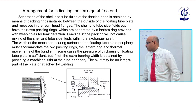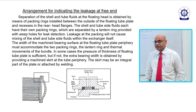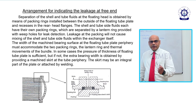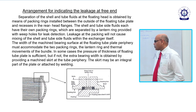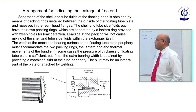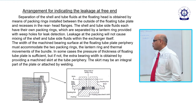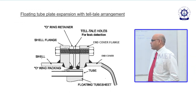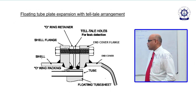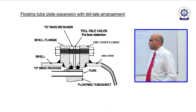Arrangement for indicating leakage at the free end: at the tube ends there are two O-rings which separate the two fluids, and in between there is a lantern ring with a hole. This prevents mixing of the two fluids. In the enlarged view, the two O-rings and a telltale hole allow any leaking fluid to come out visibly.